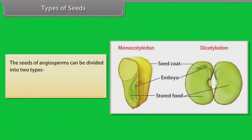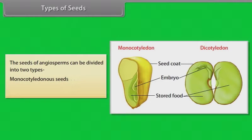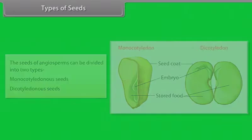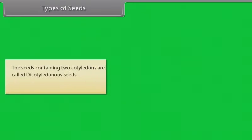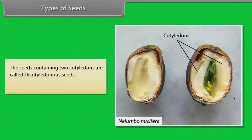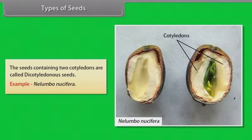The seeds of angiosperms can be divided into two types: monocotyledonous seeds and dicotyledonous seeds. Seeds containing only one cotyledon are called monocotyledonous seeds — example: maize. Seeds containing two cotyledons are called dicotyledonous seeds — example: Nelumbo nucifera.